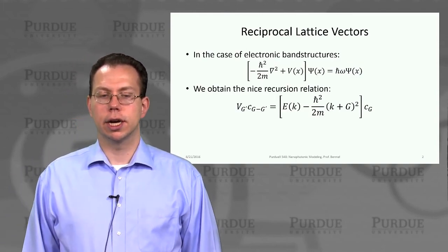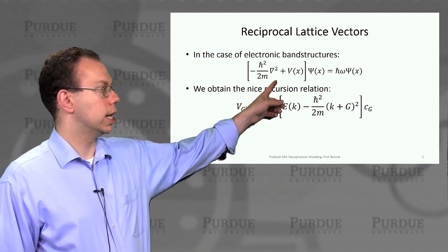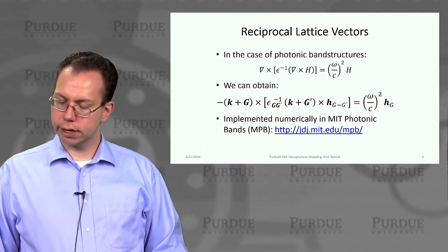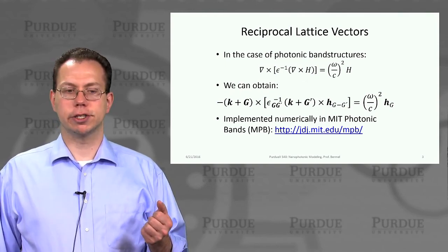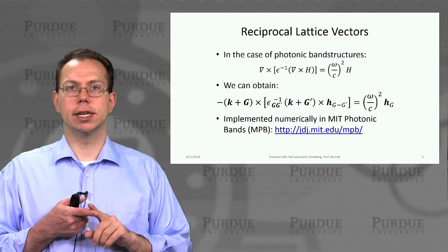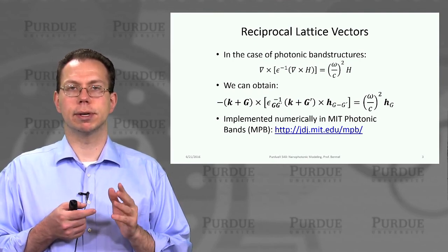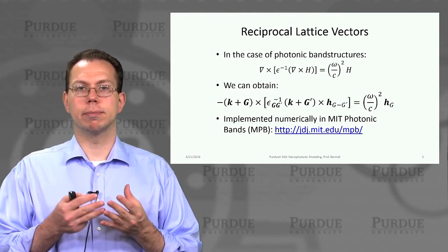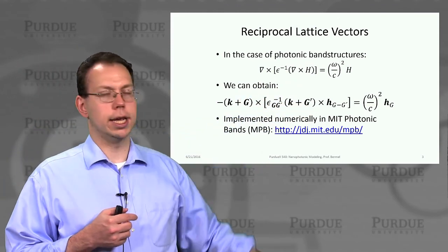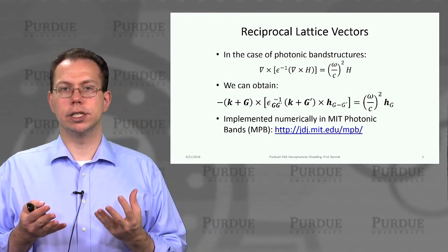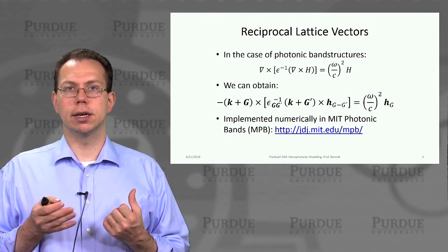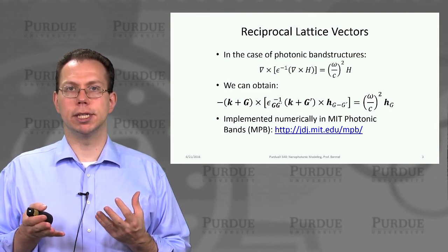We already remember that we wrote down Schrodinger's equation as a band structure problem and obtained a recursion relation using Fourier analysis. Now we're extending the same approach to photonic band structures. We're writing down the photonic master equation, which we derive by combining Ampere's law with Maxwell's correction, including displacement current, as well as Faraday's law. Combining those correctly, we get a single equation which is second order in H. The value of doing it in H specifically is that we always know divergence of B and thus divergence of H in most media would be zero, because we have no free magnetic monopoles.